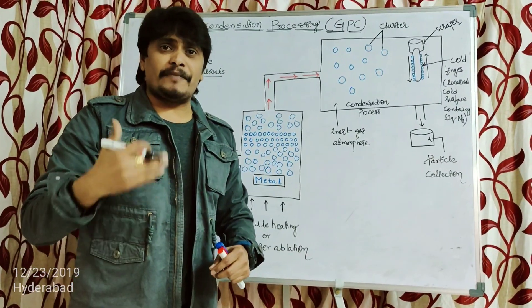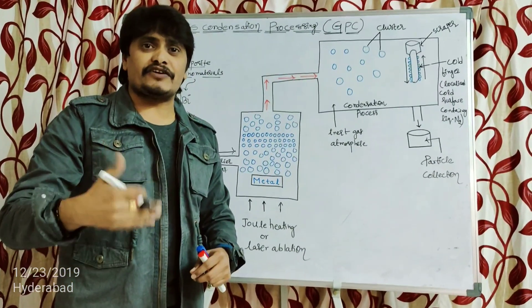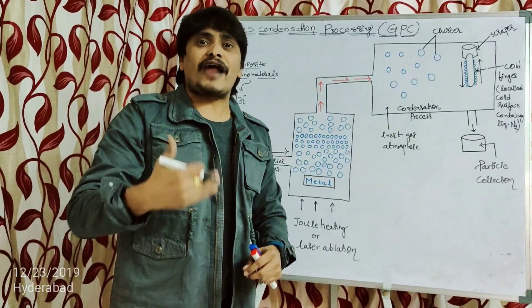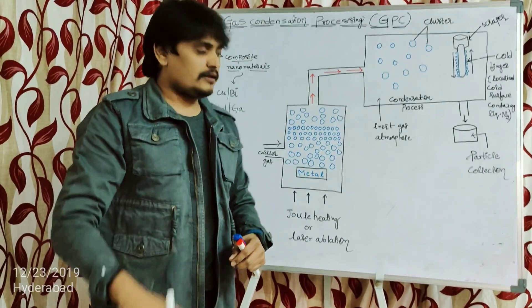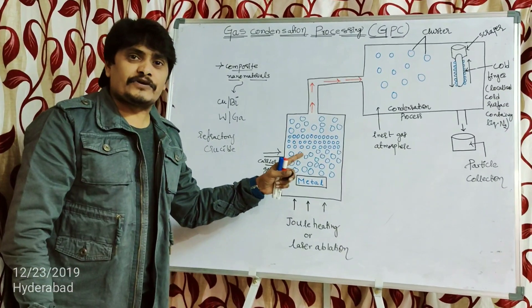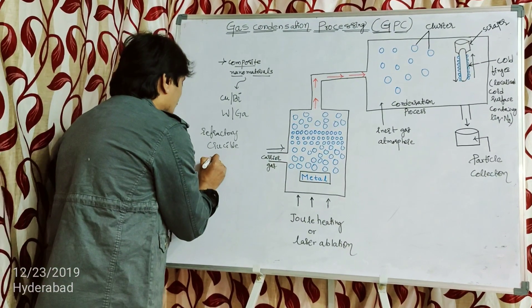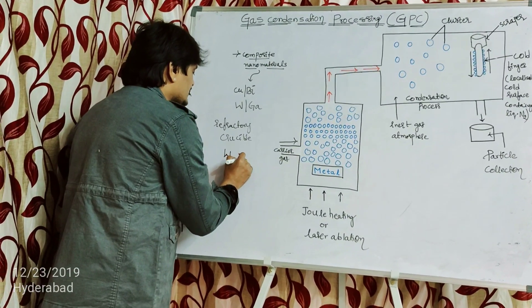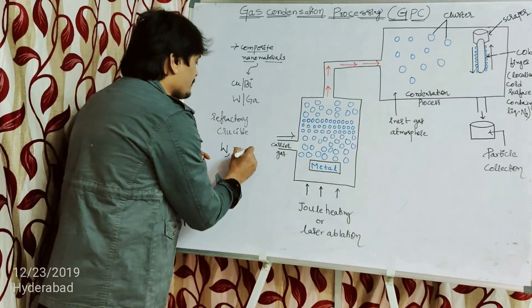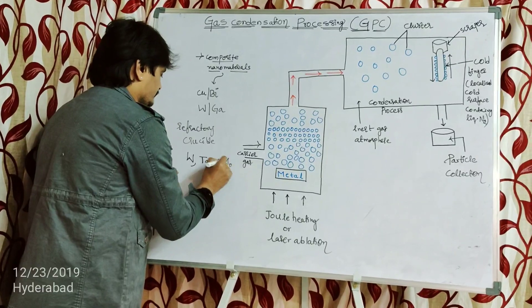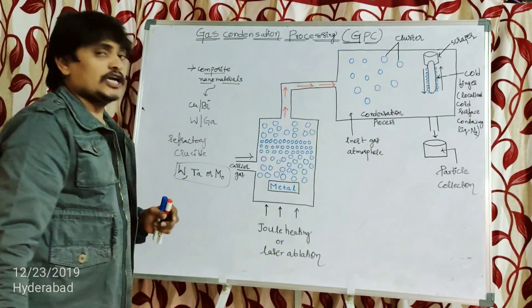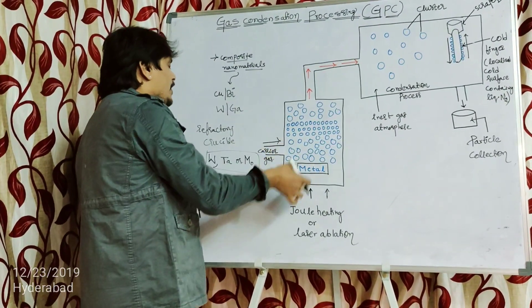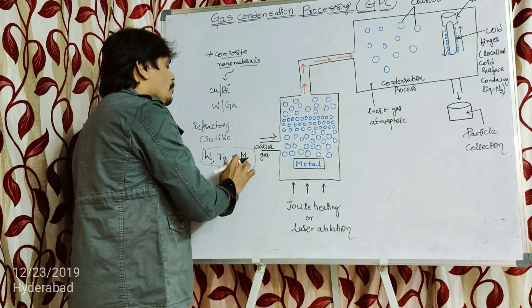This particular method consists of a refractory crucible. A refractory material is one which can withstand very high temperatures, so a refractory crucible is a crucible that can withstand very high temperatures. This refractory crucible can be made of tungsten, tantalum, or molybdenum.